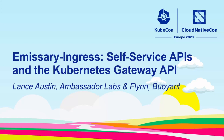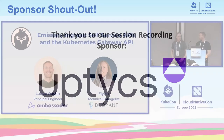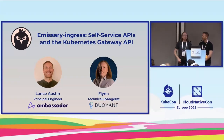This is Emissary Ingress Self-Service APIs in the Kubernetes Gateway API. I'm Lance Austin, Principal Engineer at Ambassador Labs. I'm Flynn, a Technical Evangelist at Buoyant. I used to be at Ambassador Labs, but not anymore.